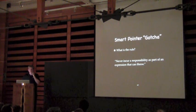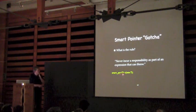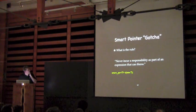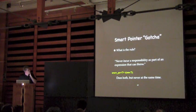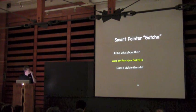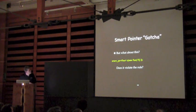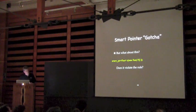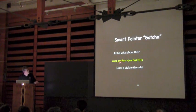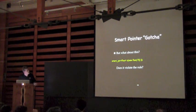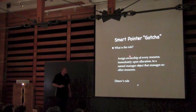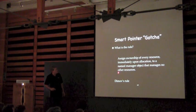How about: never incur a responsibility as part of an expression that can throw? It's complicated — everybody's laughing, realizing that's what we do all the time. But here's the good rule — this is Peter Dimov's rule: assign ownership of every resource immediately upon allocation to a named manager object that manages no other resources. It avoids the temporary problem and it's a manager resource. For every resource we get, we're going to have a manager object.